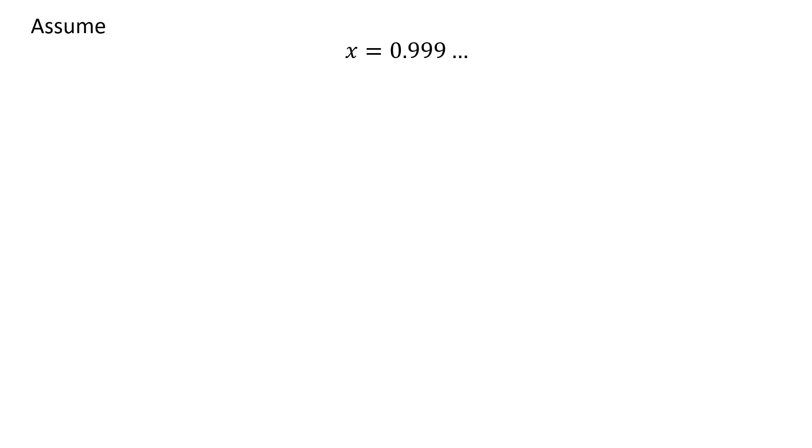Let us assume x is equal to 0.99 and so on. Multiplying both sides of the above equation gives us 10 times x is equal to 9.999 and so on.